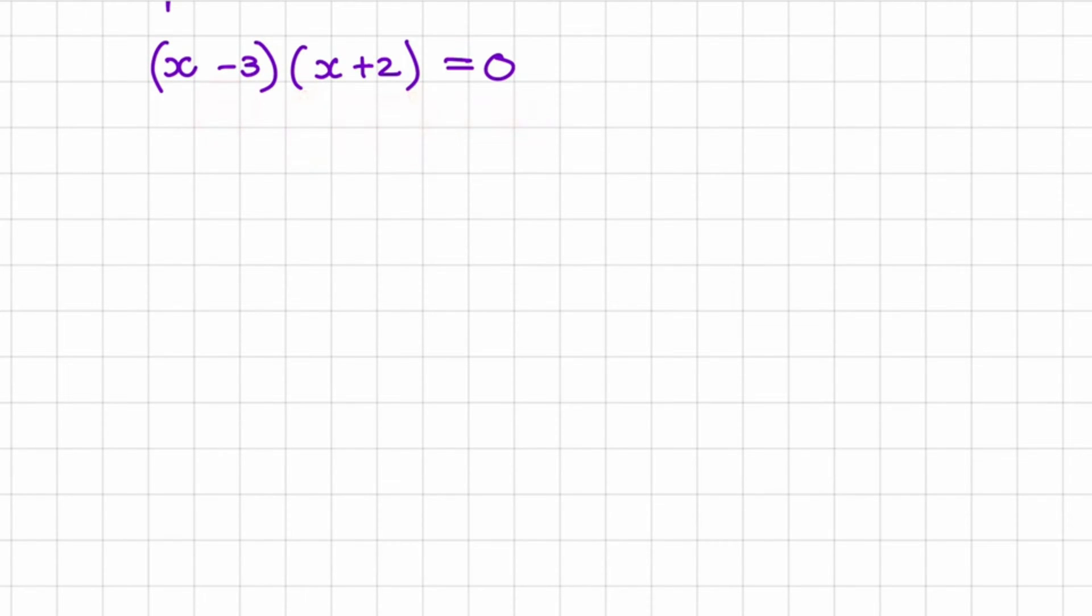And the way we can solve that is x - 3, we want that to become equal to 0. And we move the 3 over to the right hand side, then x would be equal to plus 3.